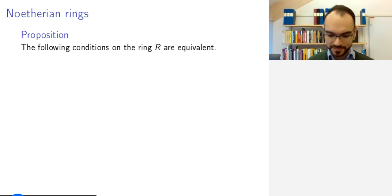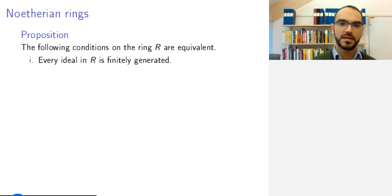To define what a Noetherian ring means, we start with a proposition and say that the following three conditions on a ring, remember ring means unital commutative ring, the following three conditions are equivalent. The first condition is the very attractive condition that every ideal in the ring is finitely generated. For every ideal there exists a finite set, so that the ideal is generated by that set.